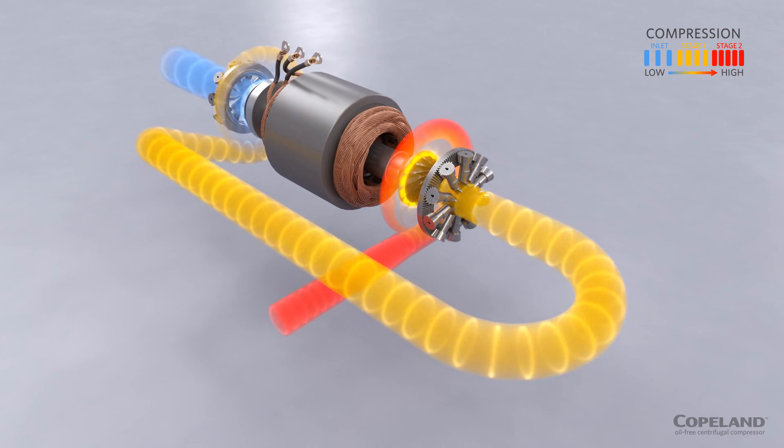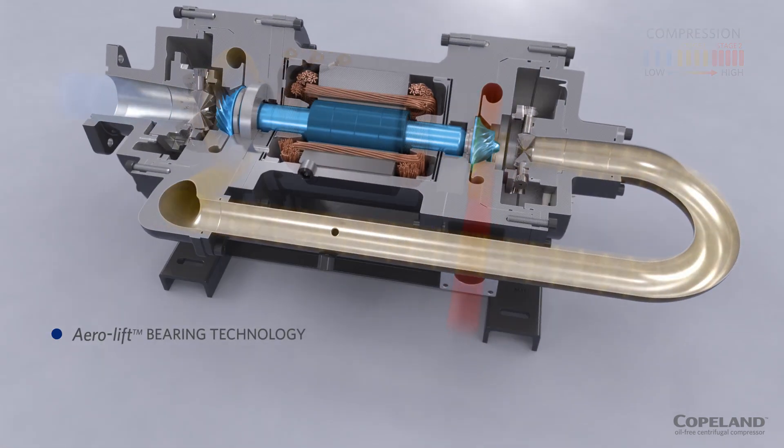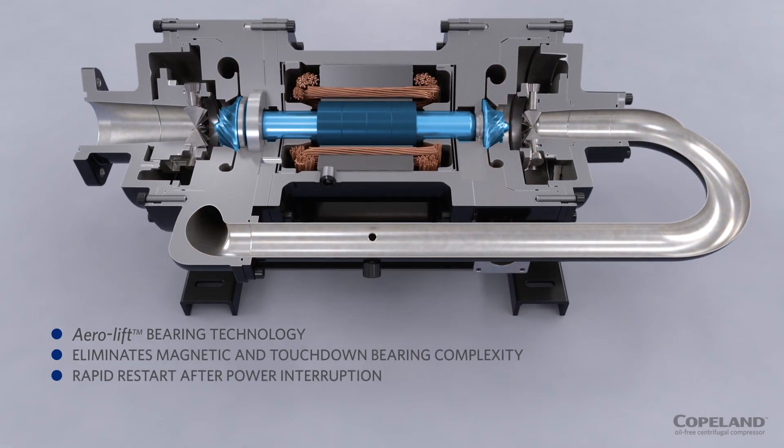While this process is similar to other centrifugal compressors, what really sets the Copeland Oil-Free Centrifugal Compressor apart is its innovative aero-lift bearing technology, which eliminates the need for complicated bearing control electronics and auxiliary redundant touchdown bearings found in other oil-free centrifugal compressors.